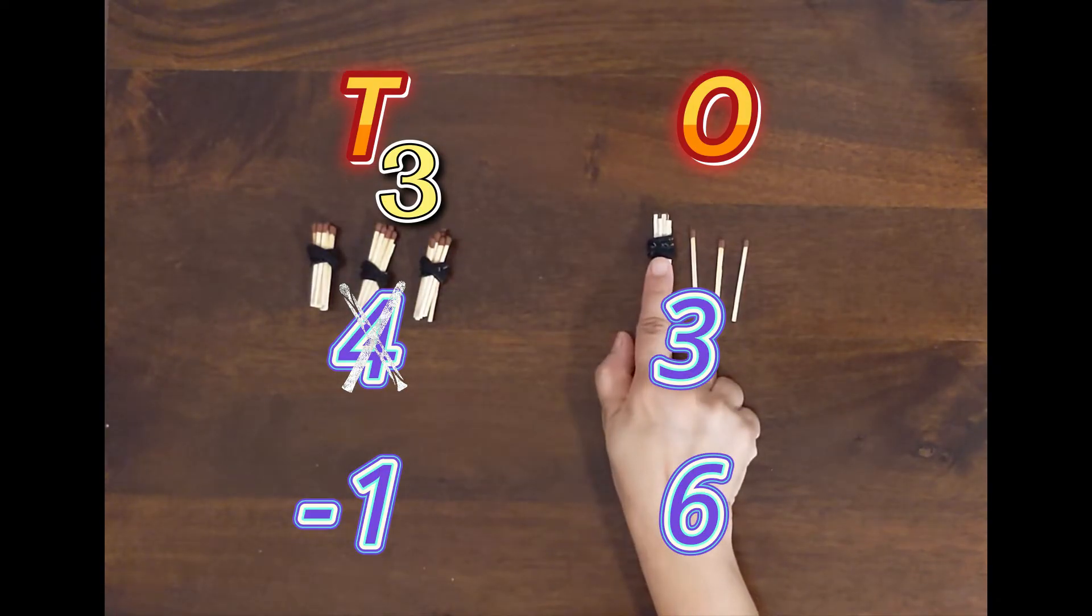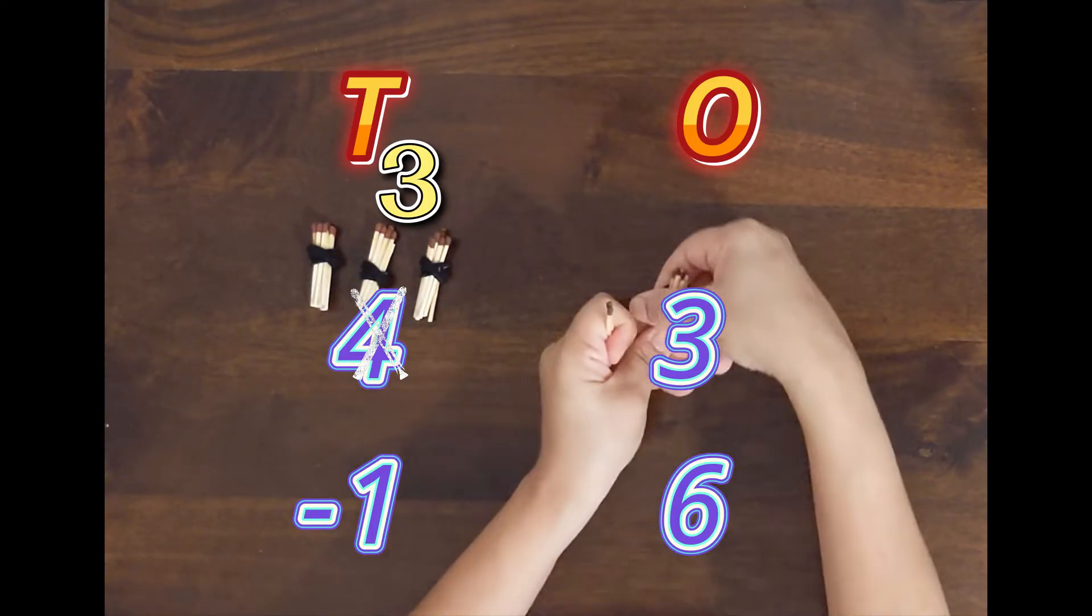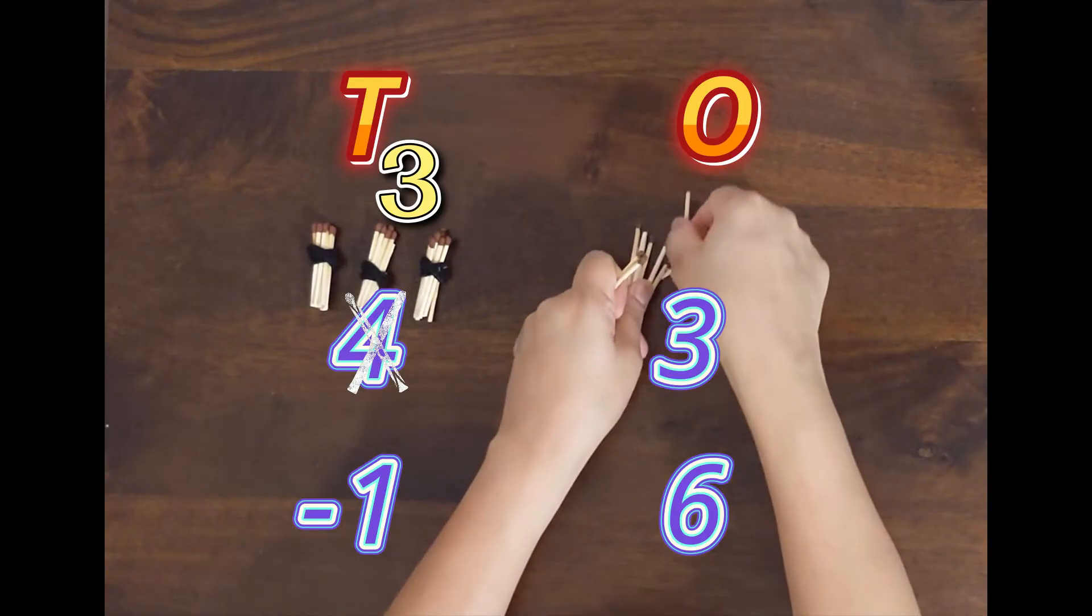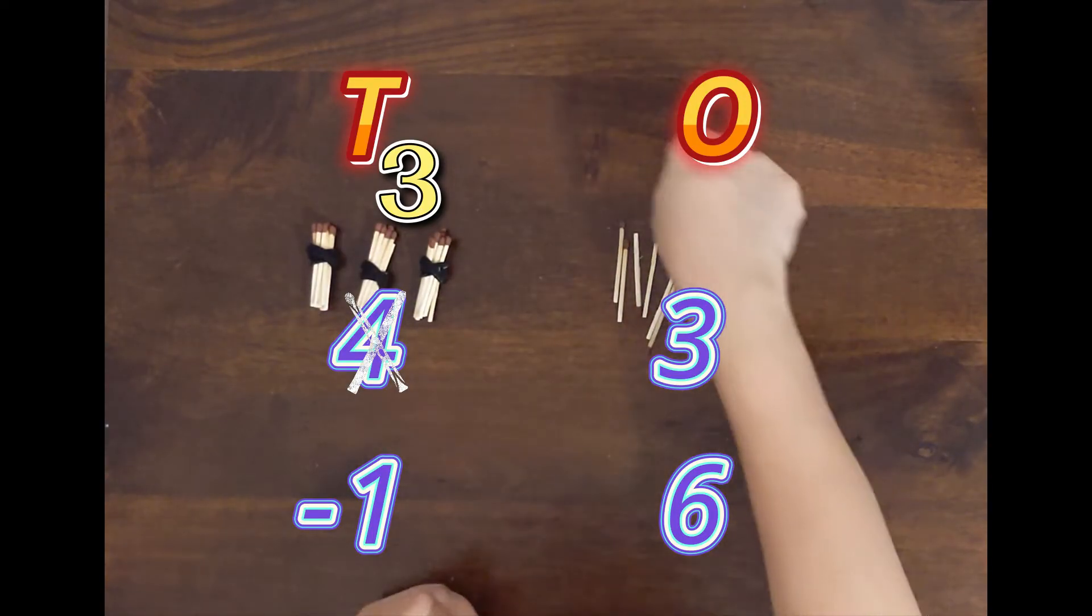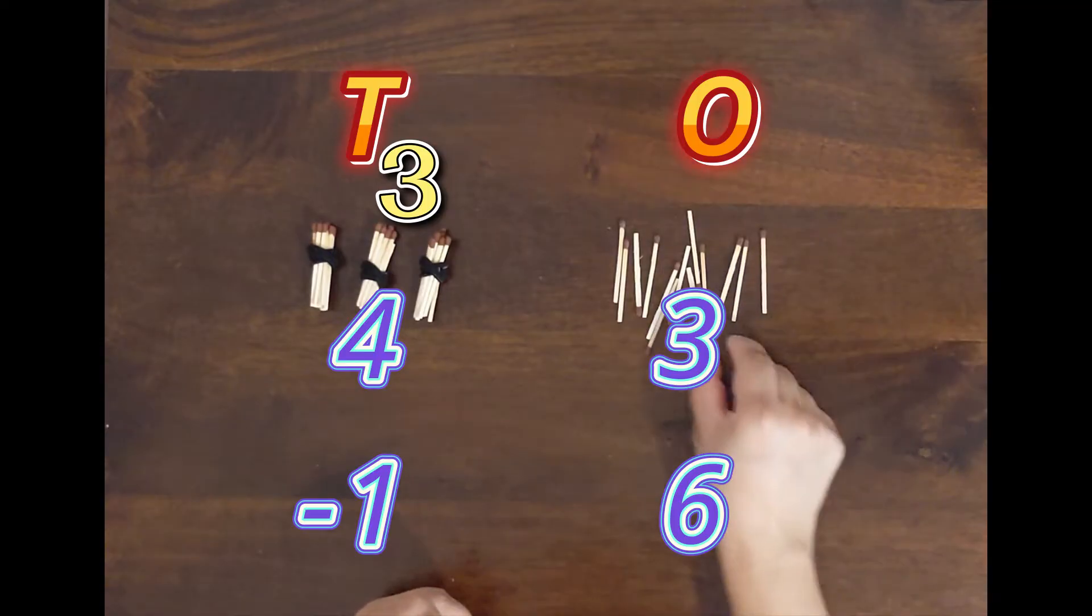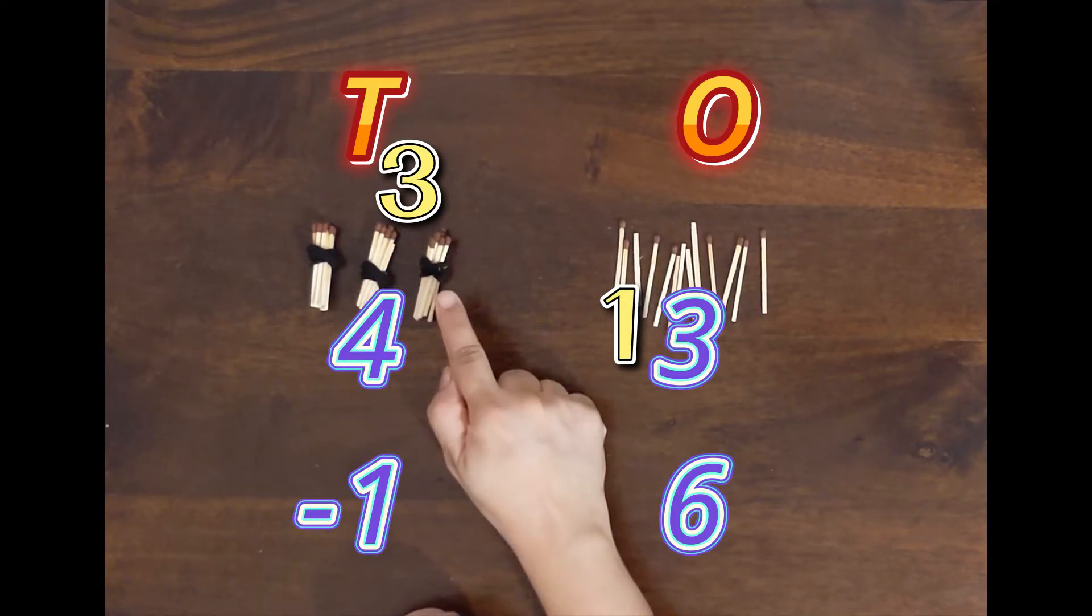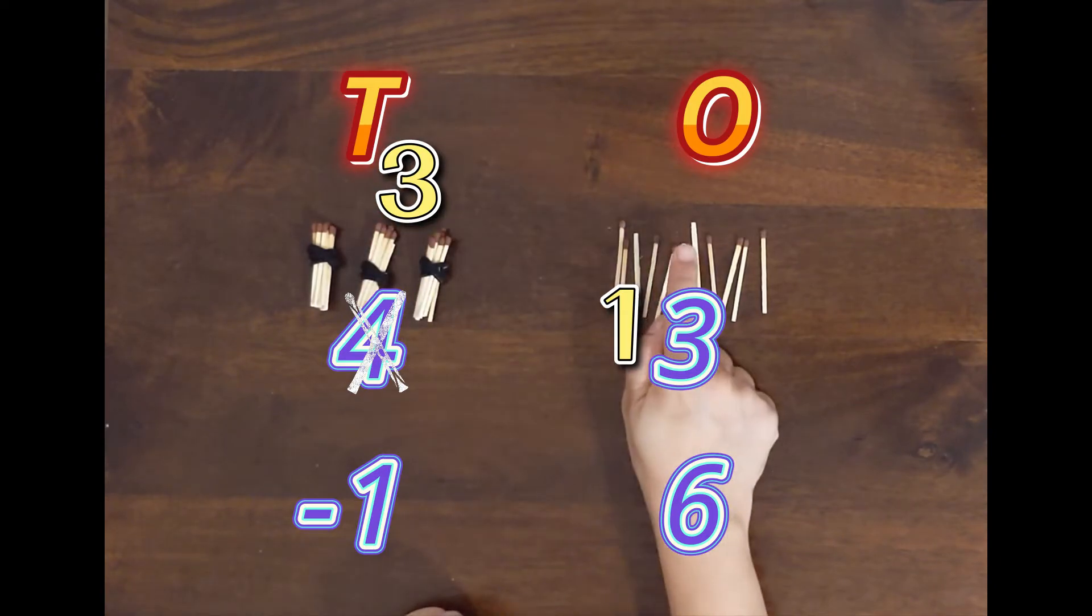And when this 1 tens reaches in the ones place, it cannot have bundle. We always have to set them free because loose sticks are always there in ones place. So now we have 10 sticks here. This is the reason why we cut 4 and write down 3, and here we write down 13.